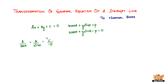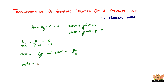Equating a over cos α to c over negative p, and b over sin α to c over negative p, we get cos α equal to minus ap over c, and sin α equal to minus bp over c. The next step is to square and add these two expressions.